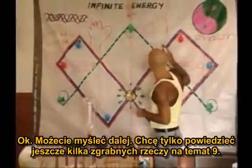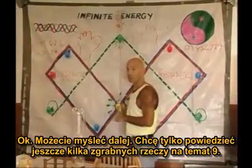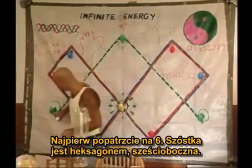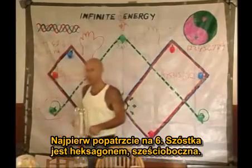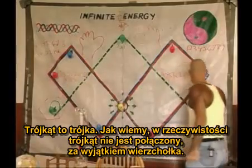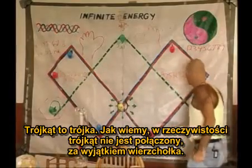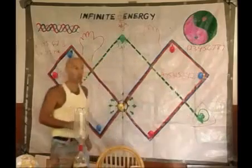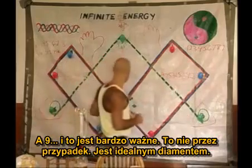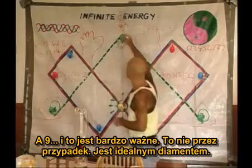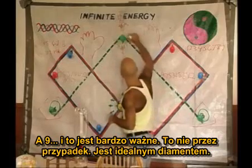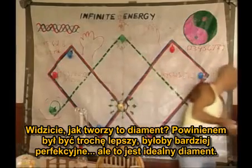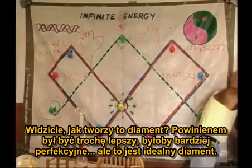A six is a hexagon — six-sided. A triangle is the three. But in reality the triangle doesn't connect except with the vertex, the point. And the nine — this is very important and it's not by accident — is a perfect diamond. See how this makes a diamond? It is the perfect diamond.